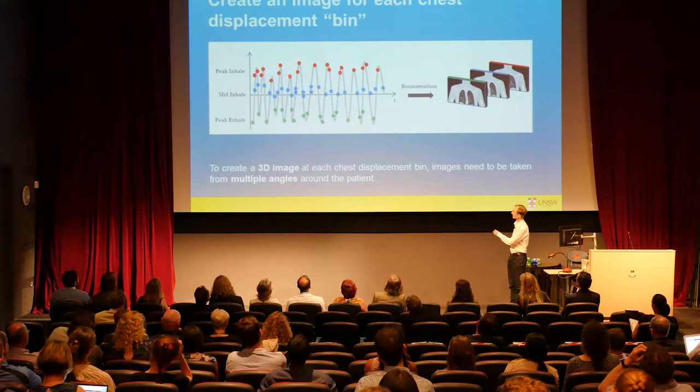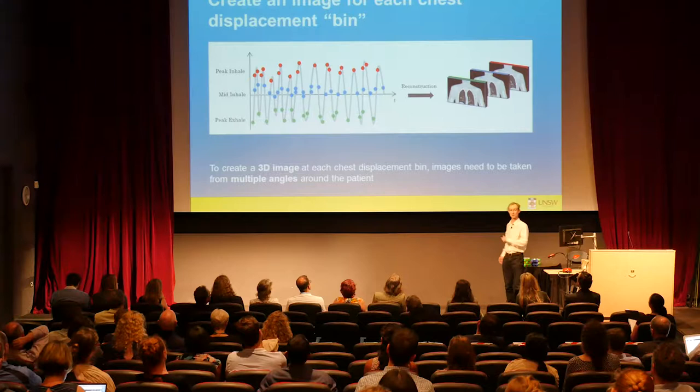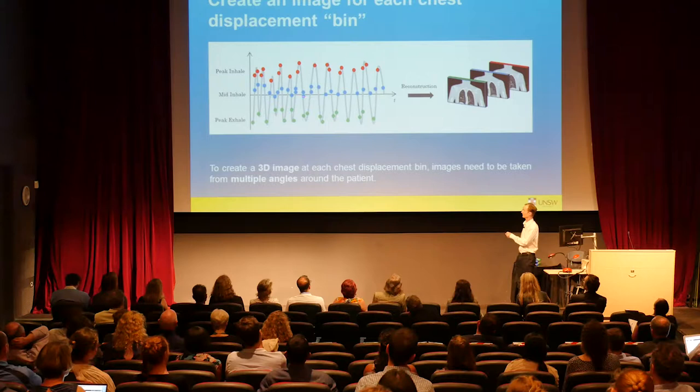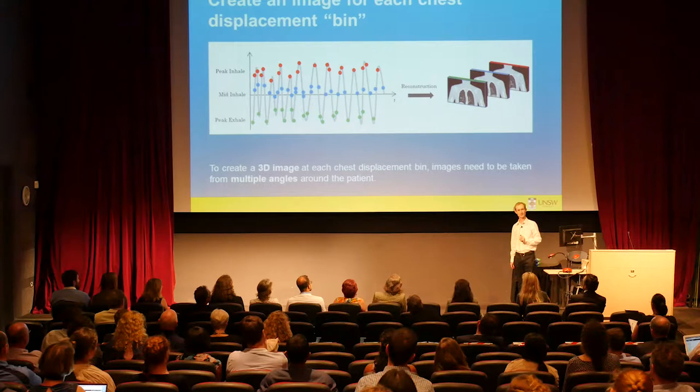At peak inhale we'll take some images — shown as red dots — and use them to create a picture of where the tumour is at peak inhale. We do the same at mid inhale and peak exhale, but in practice at about 10 different levels. So we'll have 10 different slices, and each of these slices we want to do in 3D, which requires taking beams at different angles around the patient.